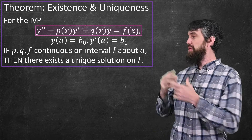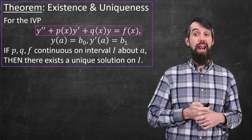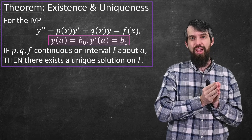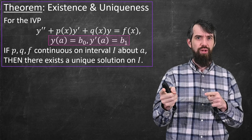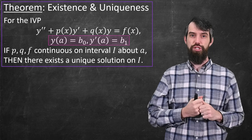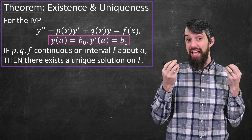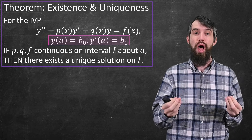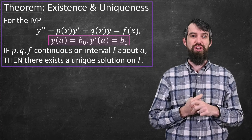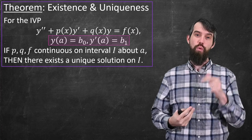We begin with a generic second-order linear differential equation — it doesn't have to be homogeneous — and we give it two initial conditions: y at the value a equals b0, and y' at the value a equals b1. What's different from first-order is that we now have two initial conditions: one specifying y, and one specifying y'. In a generalization to nth order, you would have n different initial conditions.